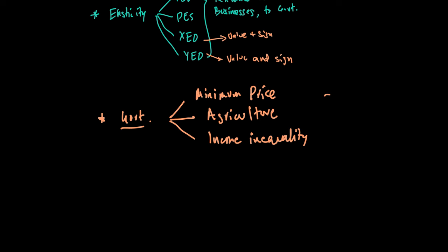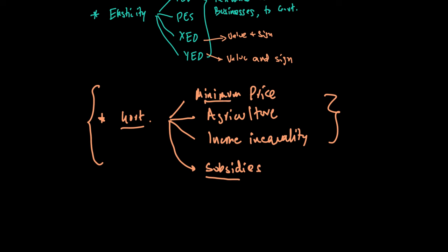What has not come recently in government intervention is something on minimum price, so there is no harm in looking at minimum price. There is also no harm in looking at agriculture and linking it with income inequality, because that is an added topic — they could mix a question related to these three things: addressing income inequality through transfer payments, minimum price, and the agricultural market. Subsidies has also not come recently, so they may ask about minimum price or subsidies, possibly comparing and contrasting them in the context of the agricultural market.